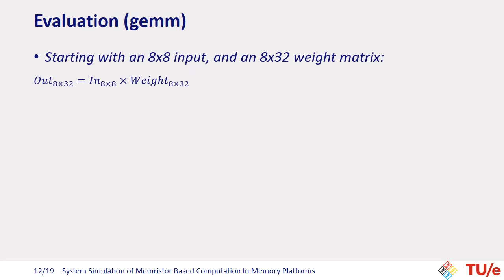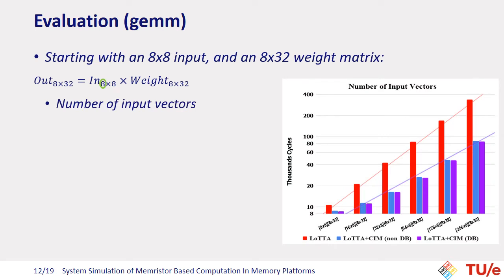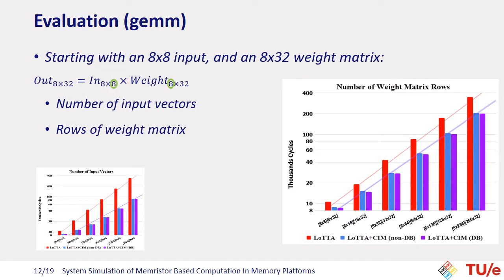To get an understanding of how memristor crossbars perform, we ran the GEMM kernel on our simulator. We started with an 8×8 input matrix multiplied by an 8×32 weight matrix. In each step, we changed one dimension of these matrices while the other two remained fixed. We observed that by increasing the number of input vectors, we can gain more and save a high number of cycles. However, when the size of the input vector is too small, the benefit of employing double buffering is rather modest. Then, we increased the number of rows of the weight matrix, increasing the size of the input vector — and the number of saved cycles almost stayed unchanged, because the time to program the crossbar dominates the whole process.